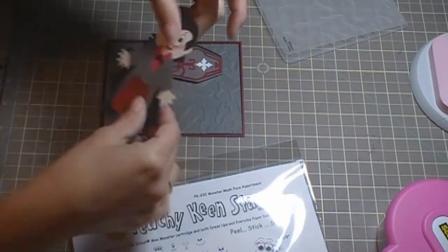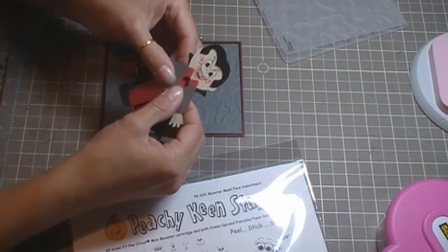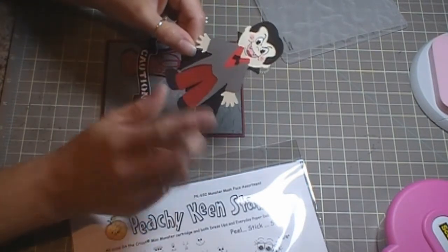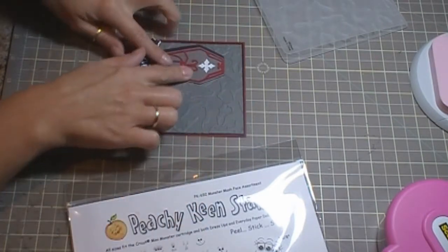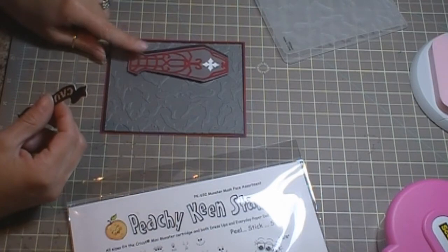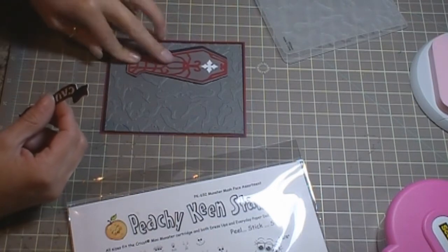And I have them cut at 4 inches. It's from the Paper Doll Dress Up Cartridge. And it's actually the Dracula, and it's on page 50. Then I have the tombstone, which is cut at 4 inches as well. This is from the Happy Hauntings Cartridge, page 58.